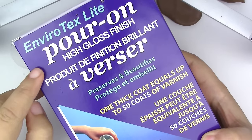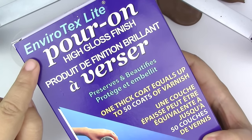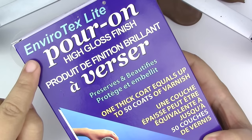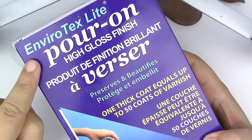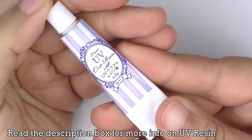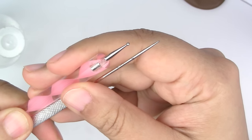This one is called Envirotex Light and I got it at a craft store. You can also find it at a home hardware store under the name Epoxy Resin. If you have UV resin, go ahead and use that instead. Round and pointy tools.